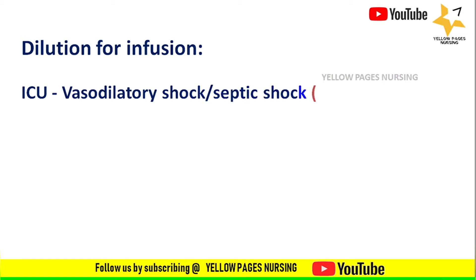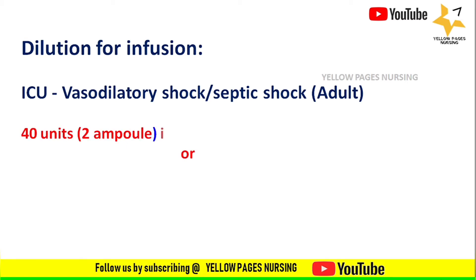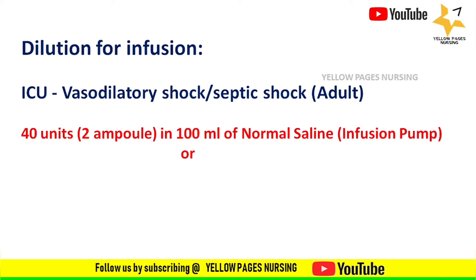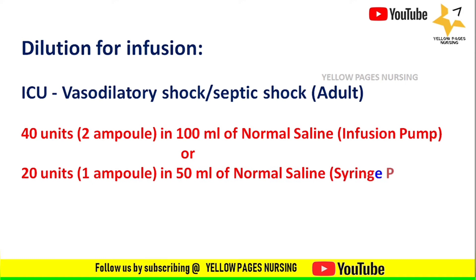Vasopressin is usually recommended for vasodilatory shock or septic shock for adults in the intensive care unit. It is diluted in either 100 ml or 50 ml of normal saline. 40 units (2 ampoules) is diluted in 100 ml of normal saline for an infusion pump, and 20 units (1 ampoule) is diluted in 50 ml of normal saline for a syringe pump.